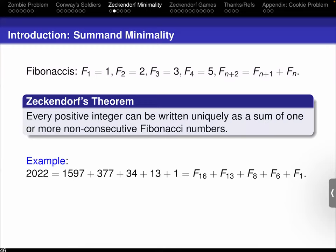If the two numbers you subtracted are adjacent Fibonacci numbers, you're a moron because you could have subtracted their sum directly. You can make this rigorous and show that every number has a decomposition. I actually have the record for the most complicated proof of this — I use the cookie problem or stars and bars. It's a much harder proof, but it tells you how many numbers have exactly k summands in their decomposition, which is very useful for a bunch of other problems.